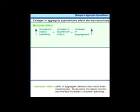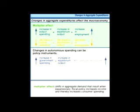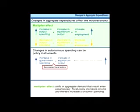You're beginning to get the idea that changes in autonomous spending can be policy instruments. If we want a larger equilibrium output to increase employment, government could spend more and stimulate the economy. This is called Keynesian fiscal policy. An increase in government spending can bring about a boom. Likewise, a decrease in government spending or incentives for reduced business or consumer spending can rein in the economy, reducing equilibrium output and lowering employment, but perhaps taking the pressure off of inflation.